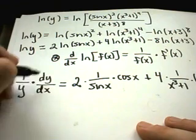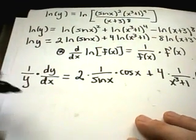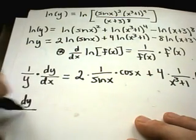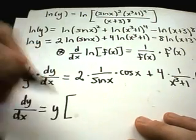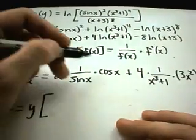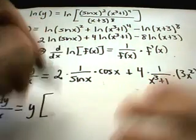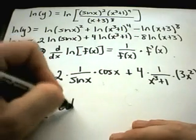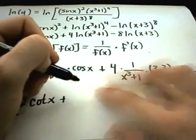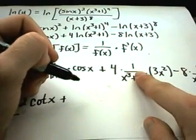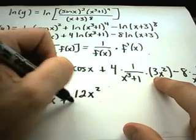In this problem what we're trying to solve for is dy dx. Well there's a one over y that I don't want there, so I can multiply both sides by y. So I have two times cosine over sine. Remember cosine over sine is cotangent. I've got four and the three x squared will go to the numerator, so four times three is twelve x squared over x cubed plus one.